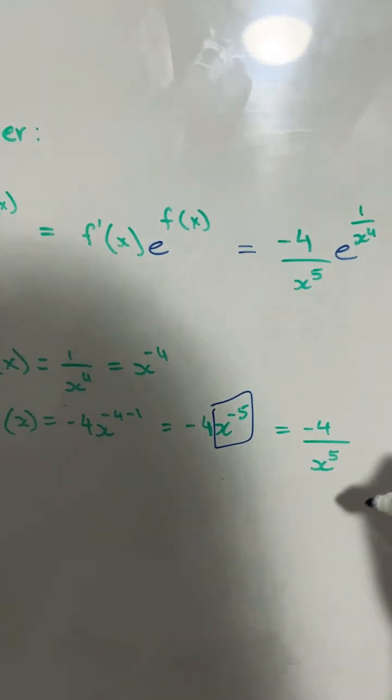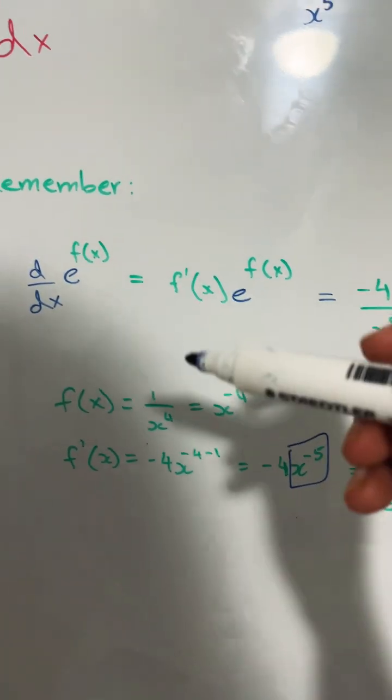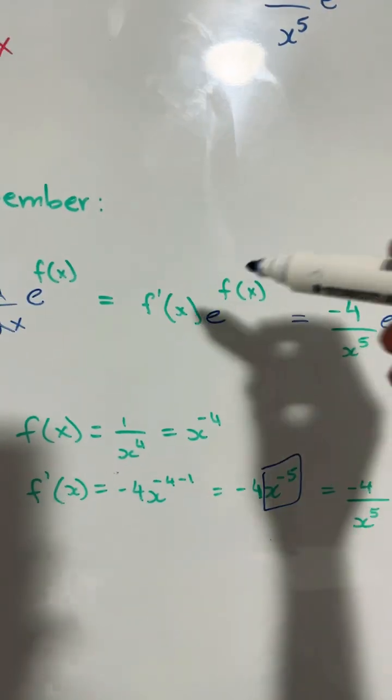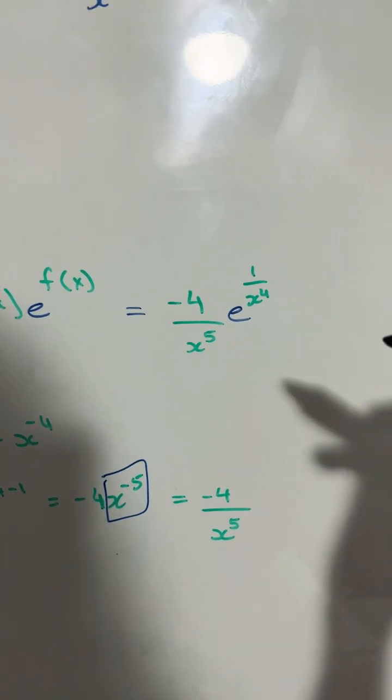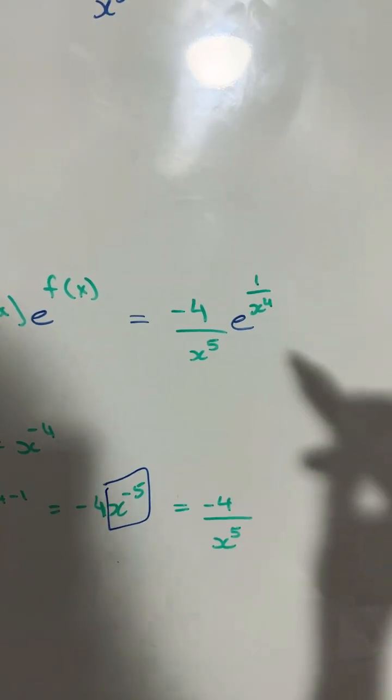And now all we have to do is put this and f of x into our original derivative equation, and it becomes negative 4 over x to the power of 5 e to the power of 1 over x to the power of 4.